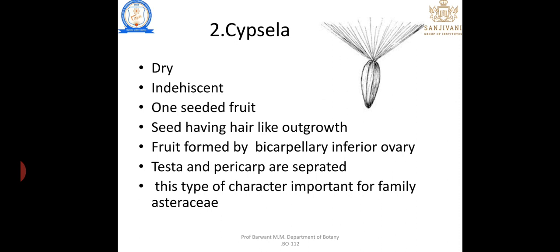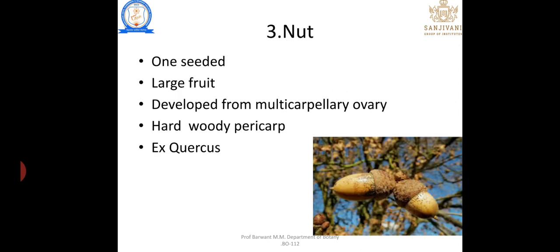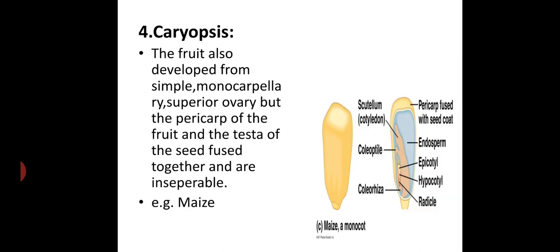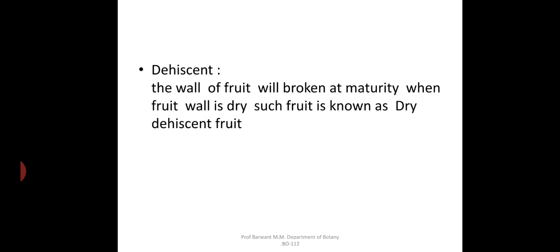Nut — a one-seeded large fruit developed from a multicarpellary ovary with a hard woody pericarp, for example Quercus. Caryopsis — the fruit is also developed from a simple monocarpellary superior ovary, but the pericarp and testa of seed are fused together and inseparable, for example maize. Dehiscent fruit: the wall of the fruit breaks at maturity; such fruit is known as dry dehiscent fruit.